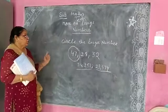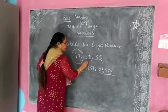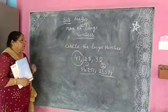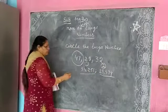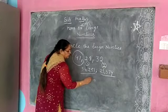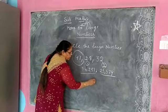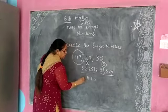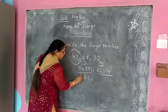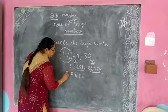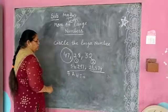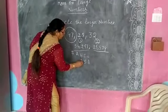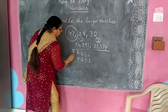We have 2 numbers. One number is this and the second number is this. First we read the first number. We make a table: ones, tens, hundreds, thousands, 10,000. Once again placing the digits: 1, 5, 2, 4, 5.